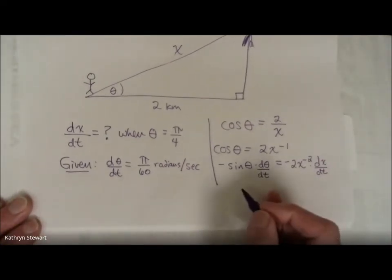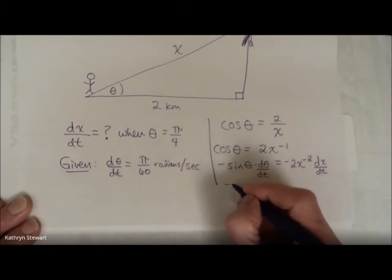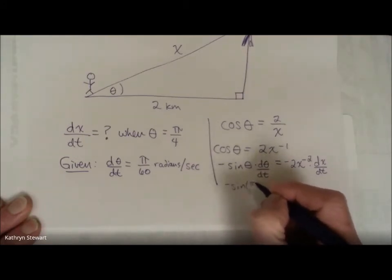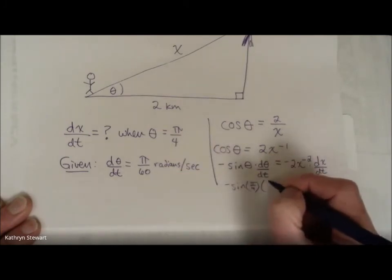All right. Let's just substitute in what I know at this instant. Let's see. I was told that my angle here is pi over 4, 45 degrees. Of course, we're always using radians in calculus since it's a base 10 measuring system and degrees are a base 60 measuring system. dθ/dt, we were told, is constant. Again, a little funny, but that's okay.